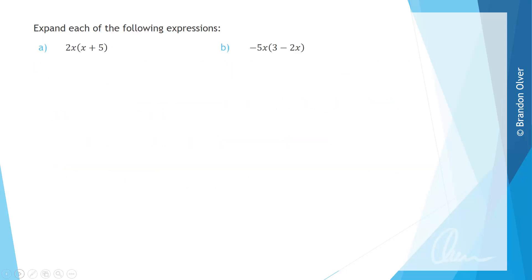Next we'll look at a series of examples and I'd encourage you to pause the video between each question so that you can have a go at the next one before I complete it for you. For the first example a, we're going to expand 2x through the bracket x plus 5, and I've colored those terms blue and green so you can see how we go about setting up the grid.